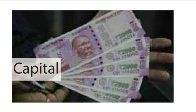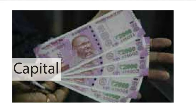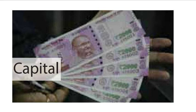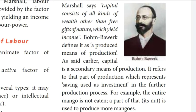Third factor of production: capital. Capital is the man-made physical goods used to produce other goods and services. In ordinary language, capital means money. In economics, capital refers to that part of man-made wealth which is used for the further production of wealth. According to Alfred Marshall, capital consists of those gains of wealth other than free gifts of nature which yield income. Money is regarded as capital because it can be used to buy raw materials, tools, implements and machinery for production.